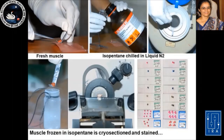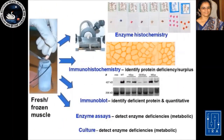Once we receive the biopsy, we have to immediately snap freeze it in liquid nitrogen, quickly cut it in a cryostat, and carry out the various stains immediately before the activity of these enzymes is lost. Only then can we perform enzyme histochemical stains that test the functional status of the muscle, immunohistochemistry to identify protein deficiency or protein surplus, and western blot which allows quantitation of individual proteins. All of these are lost if the muscle is fixed in formalin, and these very critical tests cannot then be performed.